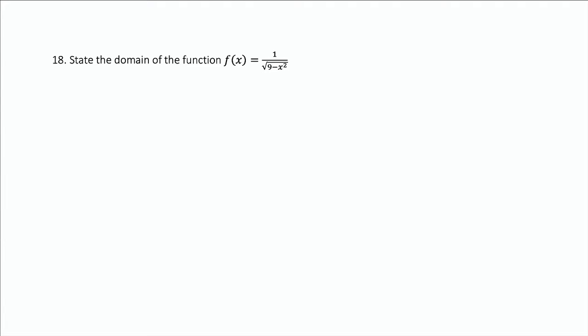We have here the function 1 over the square root of 9 minus x squared. So we've got two things going on here. We're dividing, and we have a square root.